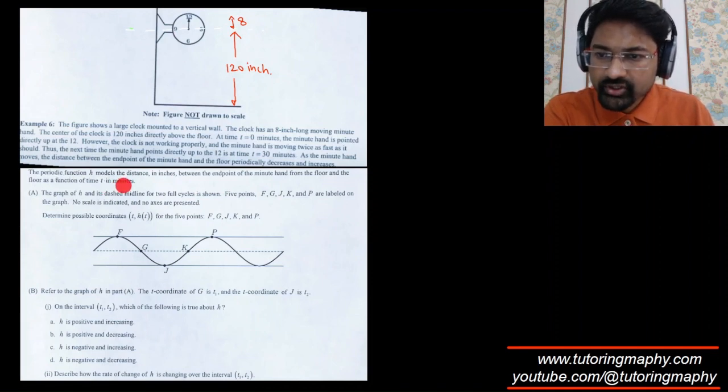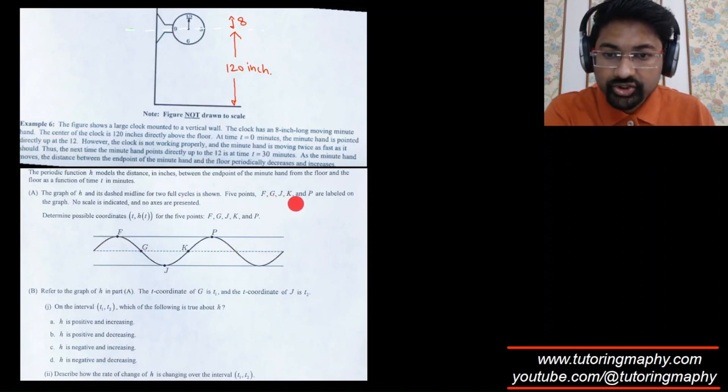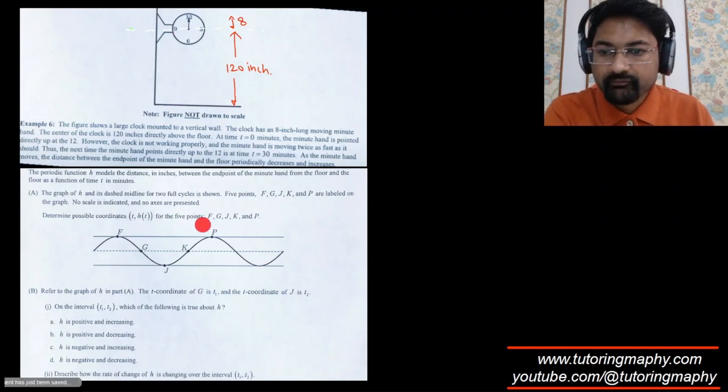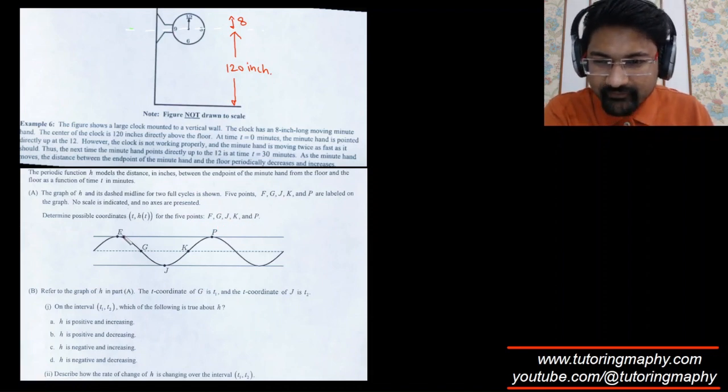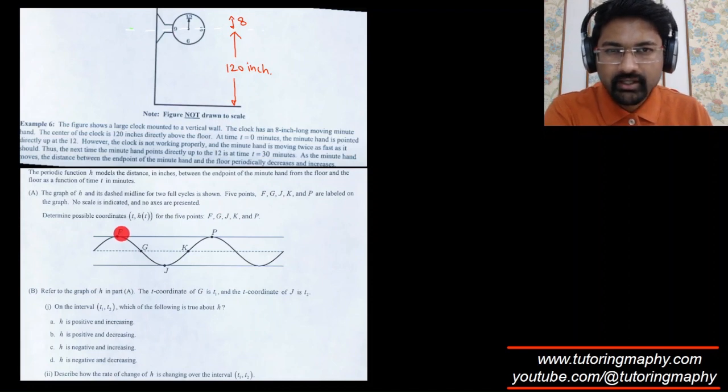The periodic function h models the distance in inches between the endpoint of the minute hand and the floor as a function of t in minutes. The graph of h and its dashed midline for two cycles is shown. Five points F, G, J, K, and P are labeled on the graph. Determine the possible coordinates in the form of time and h of time for the five points.